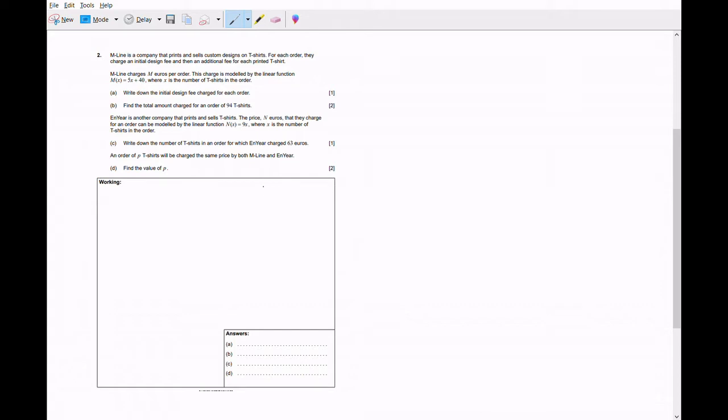Hello everybody, today we're going to be going over an IB Math Studies linear function problem. First things first, the problem gives us that M line is a company that prints and sells custom designs on t-shirts. For each order they charge an initial design fee and then an additional fee for each printed t-shirt.